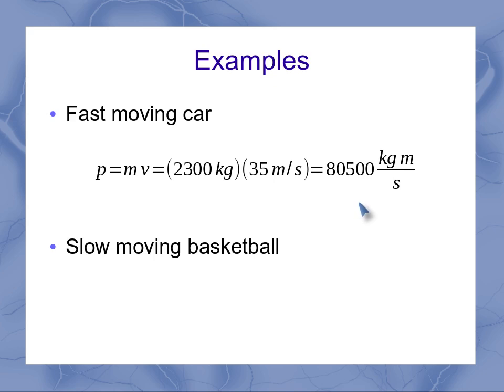We can contrast that to the slow moving basketball. So for our slow moving basketball, my mass is much lower, less than a kilogram. And a velocity of 2 meters per second is kind of quick for a basketball, but nowhere near our highway speeds up there. And so notice again, we get a very small momentum of only 1.2 kilogram meters per second. And of course, there's a whole range of values in between these.